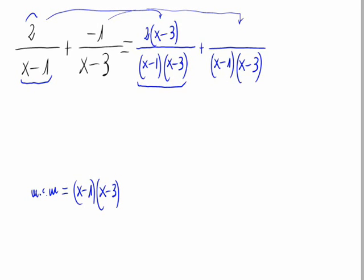And now, let's go with the other fraction. Dividing x minus 1 times x minus 3 by x minus 3, we would have just x minus 1. So, it would be minus 1 times x minus 1. And this is the same as the common denominator, x minus 1 times x minus 3.